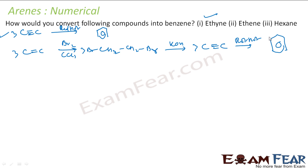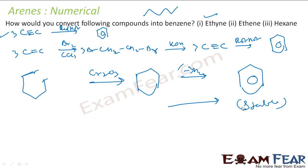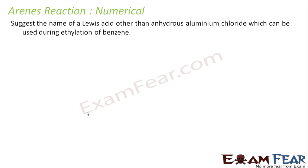For hexane: take n-hexane (a straight-chain C6 compound), pass it over Cr2O3 catalyst — hydrogen is removed and a ring forms, giving cyclohexane. Then remove three more H2 molecules to give benzene. This works easily because benzene is more stable than cyclohexane, so the thermodynamics favors the product.